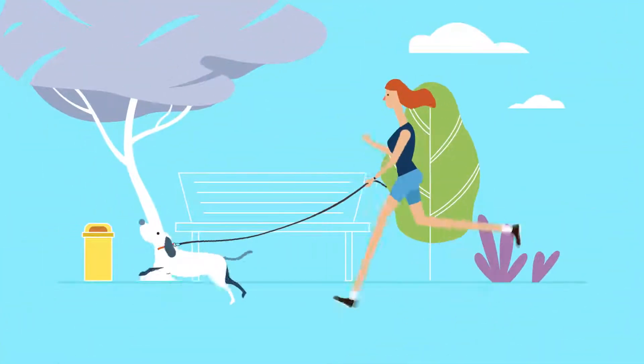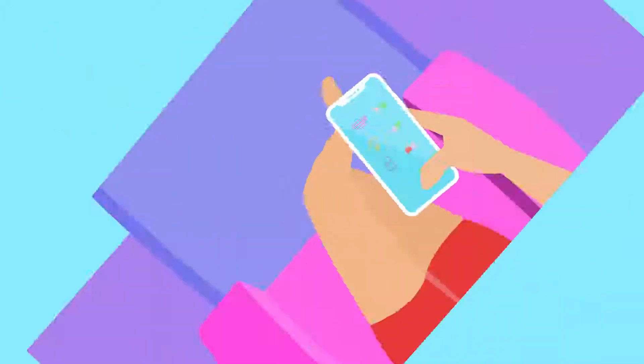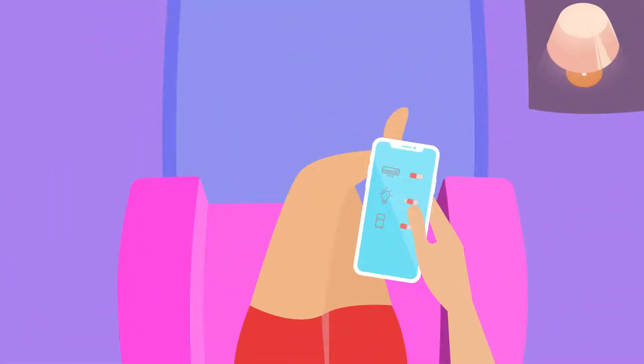When she goes out to jog, her Apple Watch keeps track of her vital parameters. She monitors everything from air conditioning to refrigeration and lighting to access control using her smart home application.